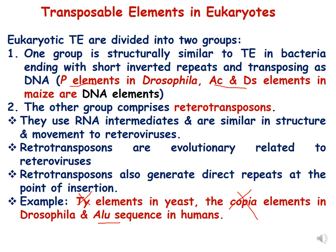The second group comprises retrotransposons. These retrotransposons use RNA intermediates and are similar in structure and movement to retroviruses. Retrotransposons are evolutionarily related to retroviruses and also generate direct repeats at the point of insertion, like a typical transposon or IS element. Examples include the TY element in yeast, copia elements in Drosophila, and LINE sequences in humans.